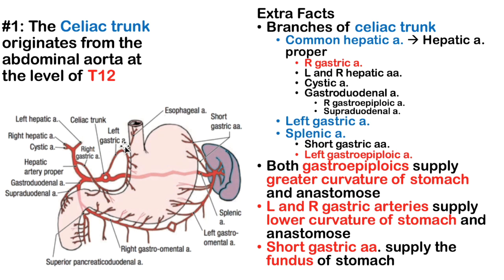That's the second branch of the celiac trunk. The third branch runs behind the stomach — you can see it kind of transparent there. That's the splenic artery.